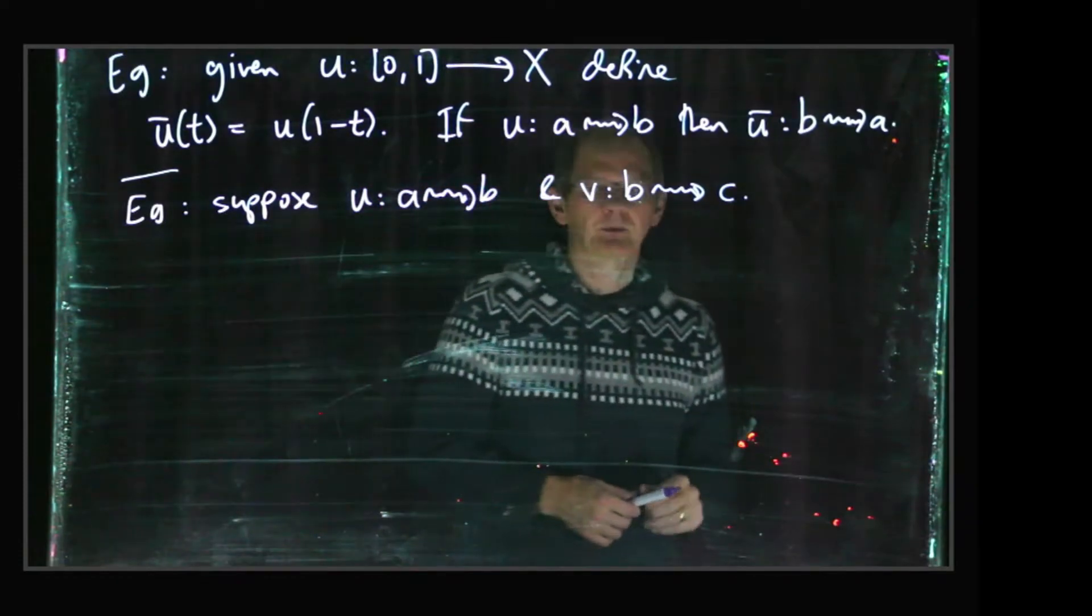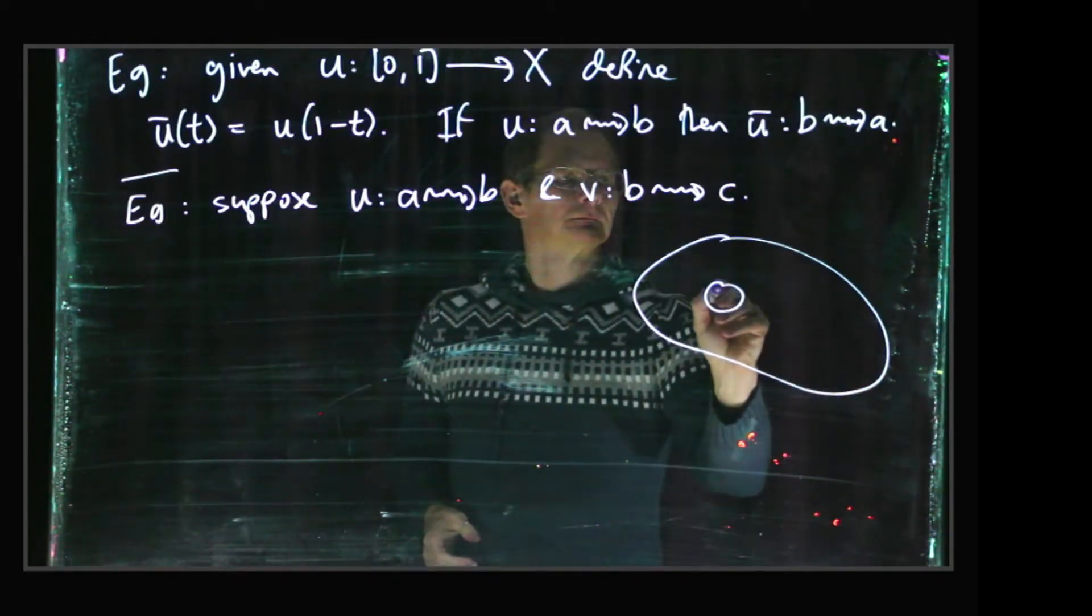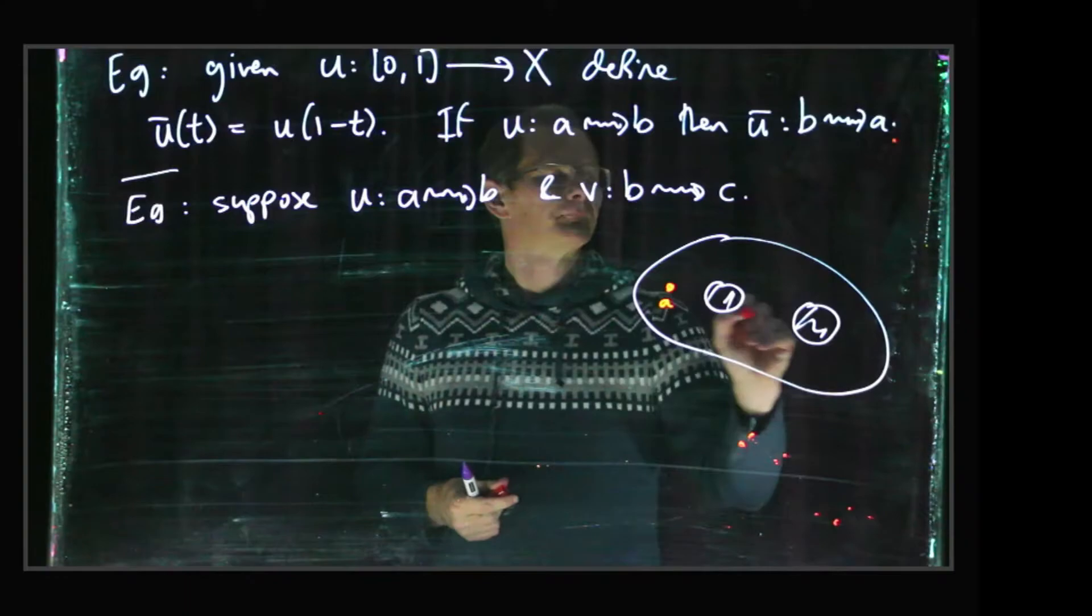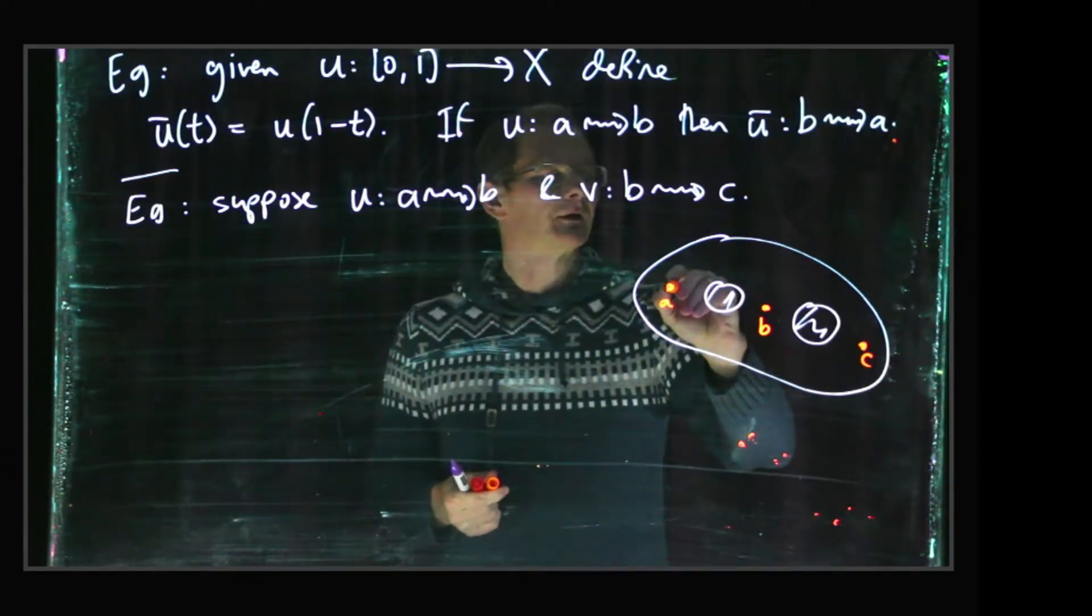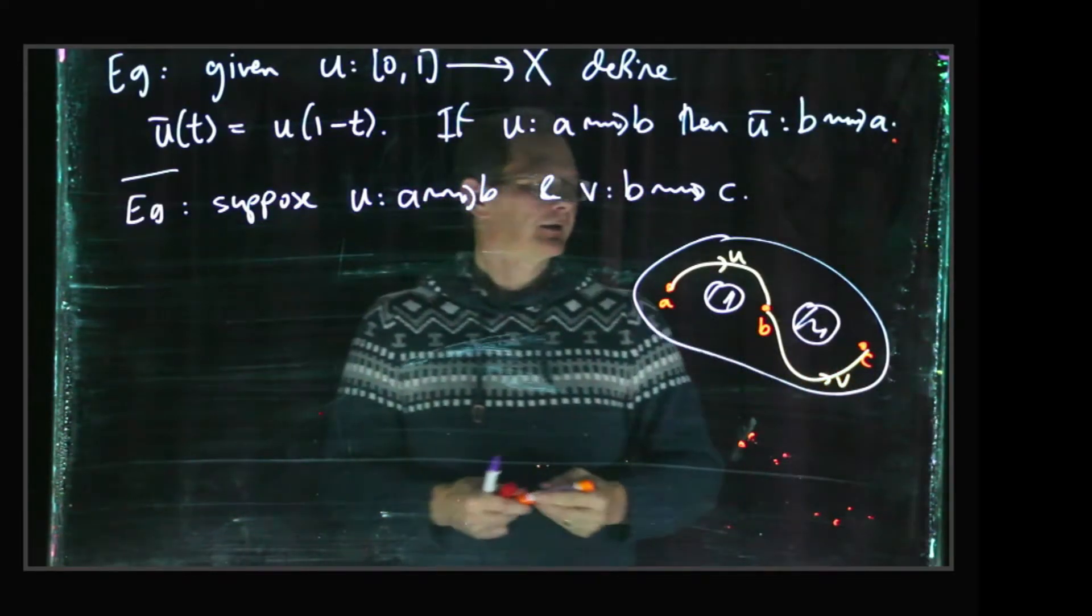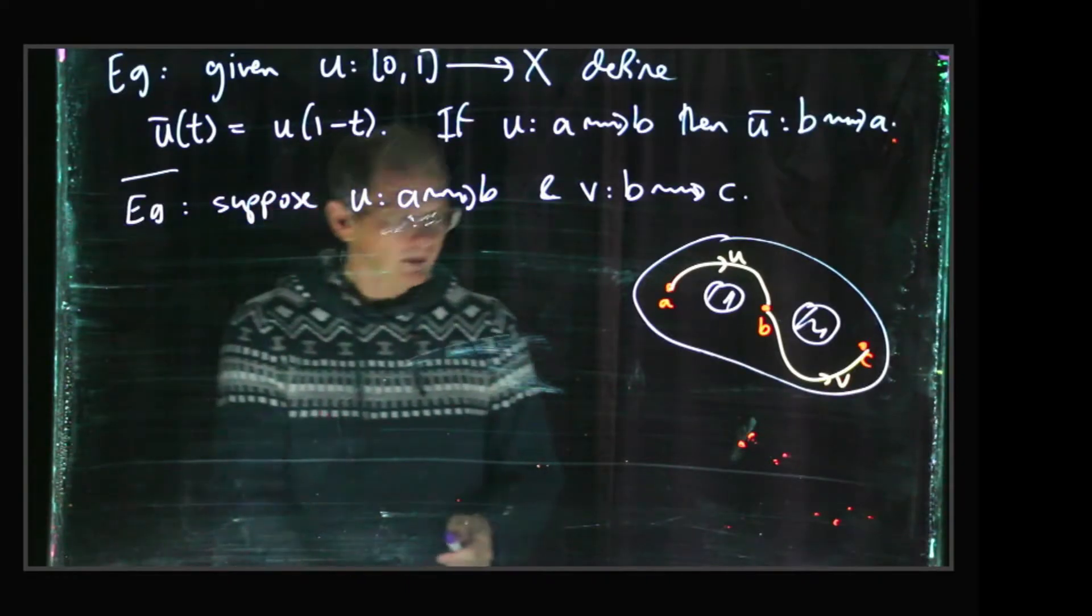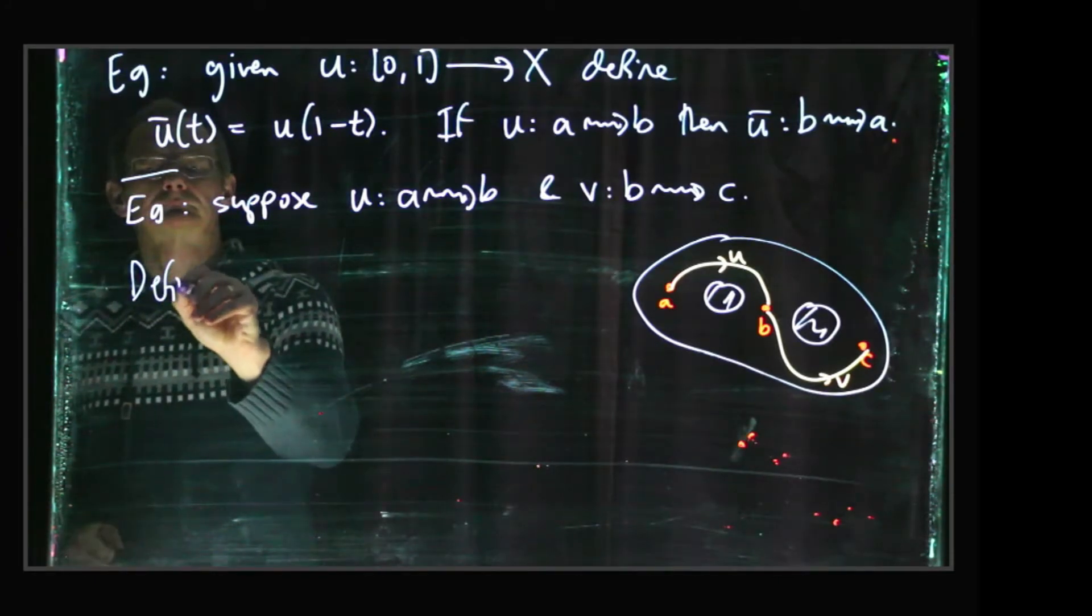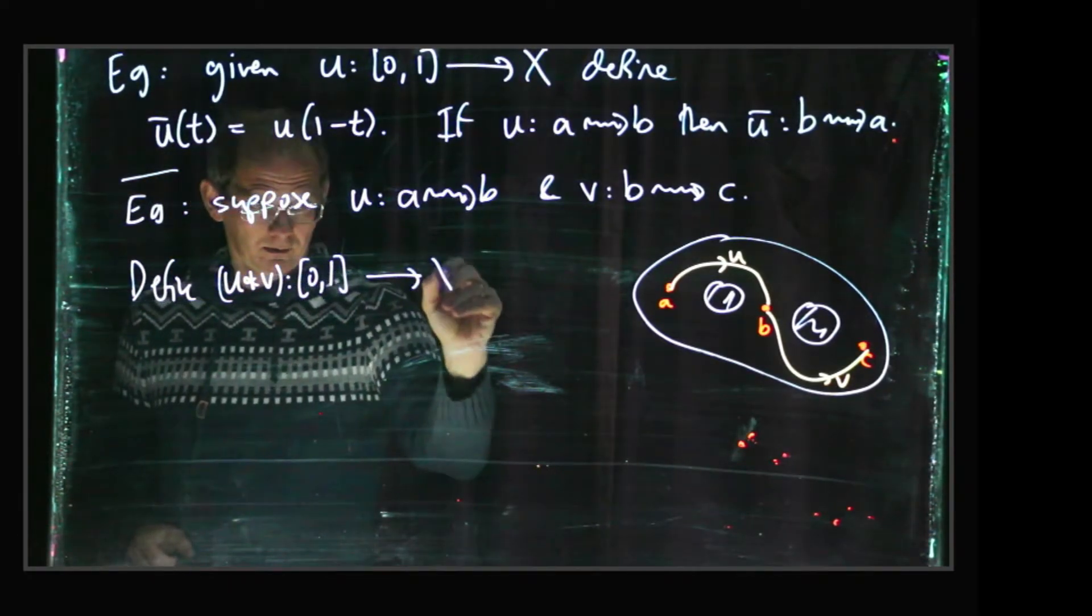Now here's something a little bit more subtle, so suppose we've got a path u, which goes from a to b, and a path v, which goes from b to c. So it could be like this, so here's our a, here's our b, here's our c, and we've got a path u, which goes like this, and path v, which goes like this, and obviously visually you could just join them together to get a path which goes from a to c. So let's see, the sort of problematical formulation of that, we're going to define u star v function from [0,1] to X.